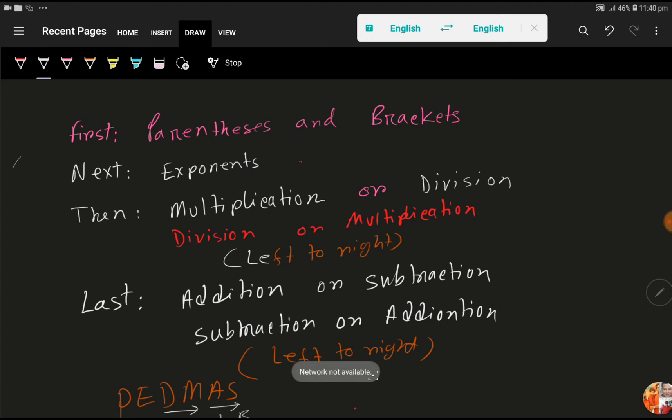Then we'll work on addition or subtraction or subtraction or addition. That is, we'll work on left to right. Actually, the precedence or priority of multiplication and division is the same. And on the other hand, addition and subtraction, the precedence or priority of addition and subtraction is equal.